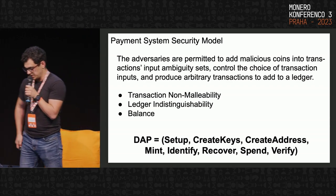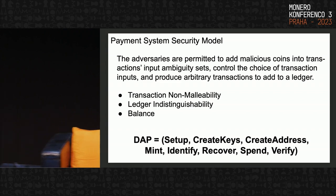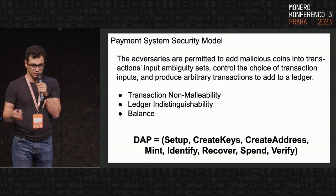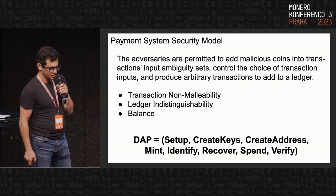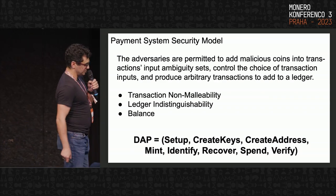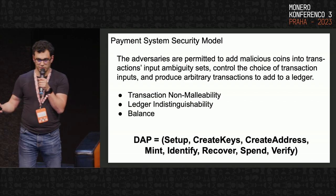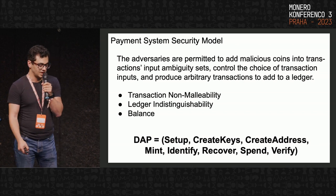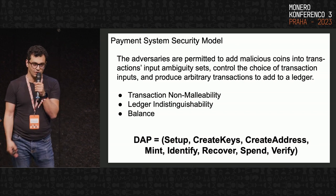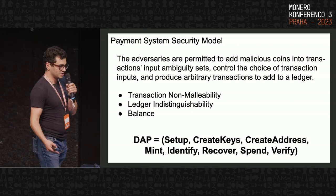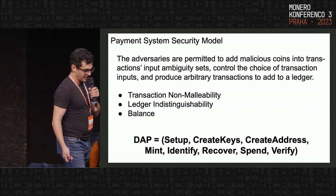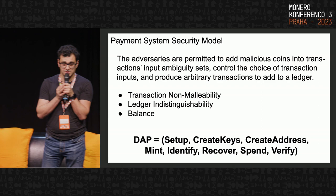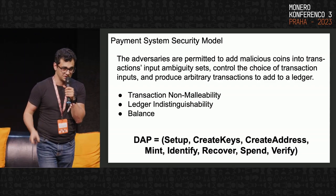In this framework, we formally prove that Spark ensures three security properties: the balance property, ledger indistinguishability, and transaction non-malleability. Non-malleability means no adversary can alter user transactions or redirect outputs before the transaction is added to the ledger. Ledger indistinguishability captures both the anonymity and confidentiality properties — no adversary can learn more than what is publicly revealed on the ledger. The balance property ensures that no adversary can spend more coins than they have minted or received.